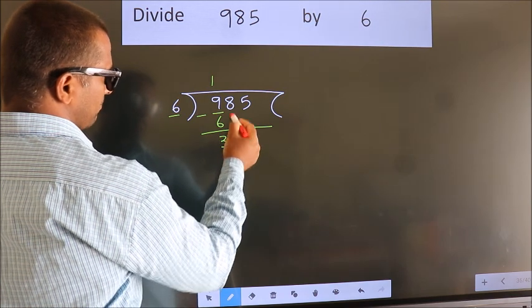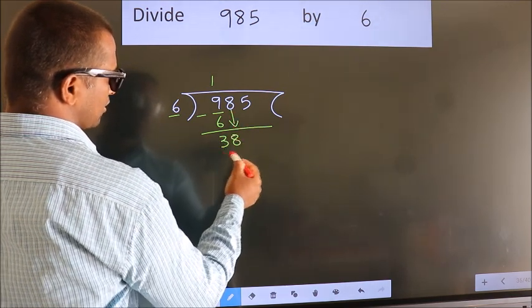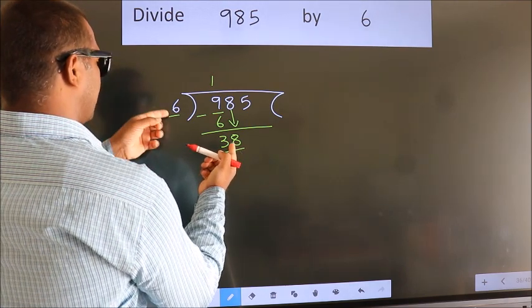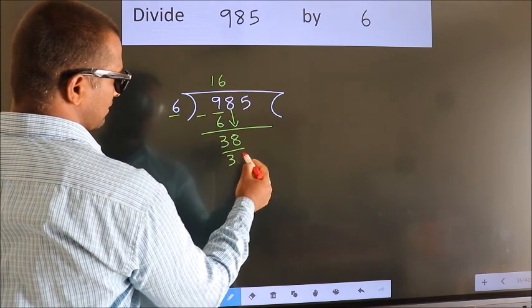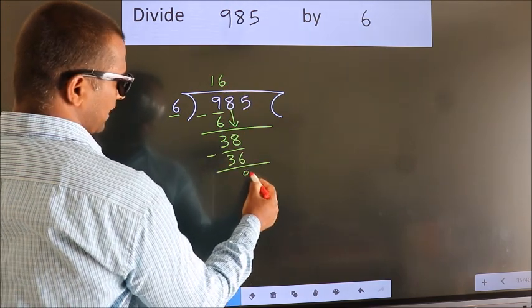After this, bring down the beside number. So 8 down, so 38. A number close to 38 in the 6 table is 6 sixes, 36. Now we subtract. We get 2.